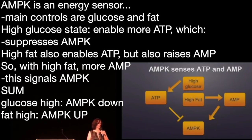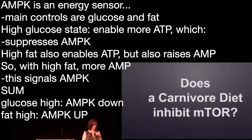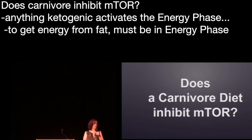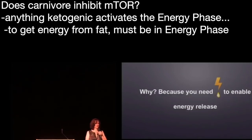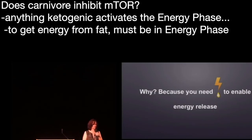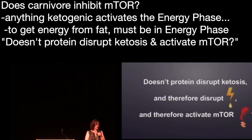When glucose is high, AMPK is suppressed. When fat is high and glucose is low, AMPK is activated. This brings us to whether a carnivore diet actually inhibits mTOR. Anything that's ketogenic activates the energy phase, because in order to get energy from fat, you have to be in the energy phase.